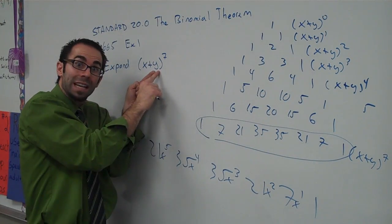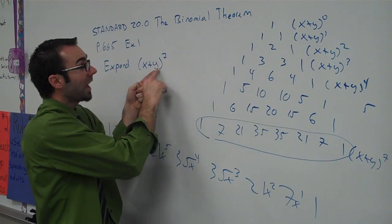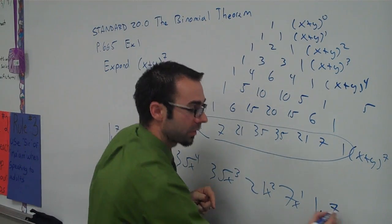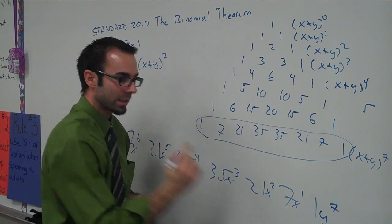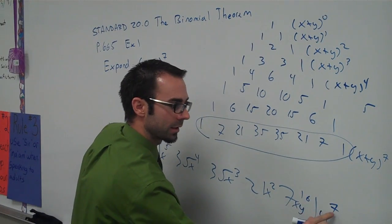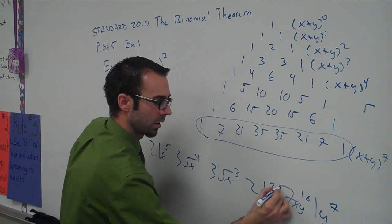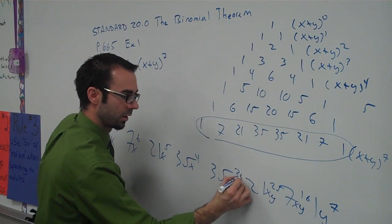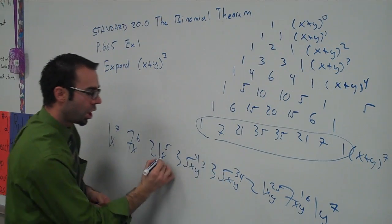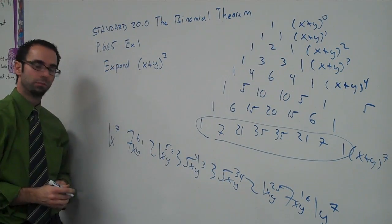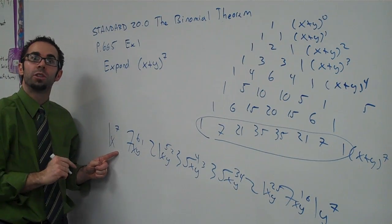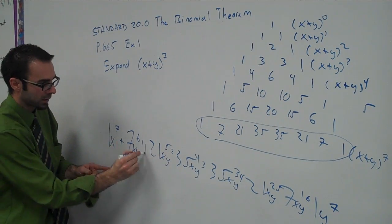And then you go to your second variable, y, and you start on the right-hand side. Y to the power of seven. And then go now from right to left. Y to the power of six. See, seven, six, five, four, three, two, one. And you don't put zero, because y to the power of zero is just one.